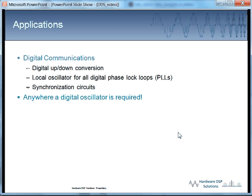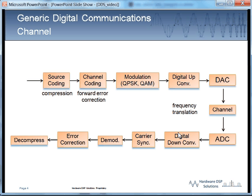So where do we find DDSs? I would say they're most commonly found in digital communications applications where we need to do up and down conversion or maybe some kind of carrier synchronization, like in a phase lock loop of some sort. But anywhere where a digital oscillator is required.